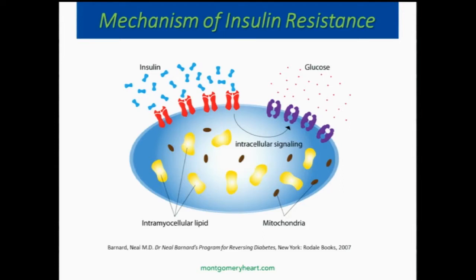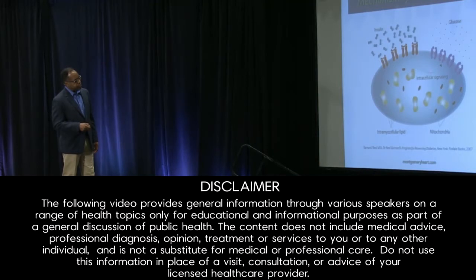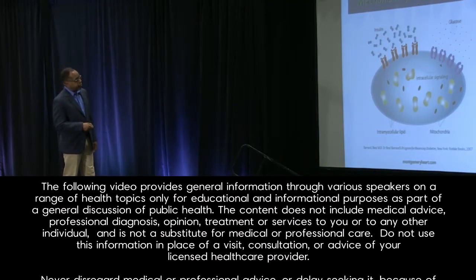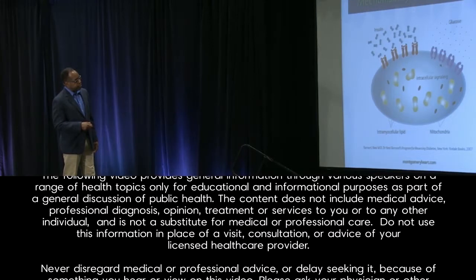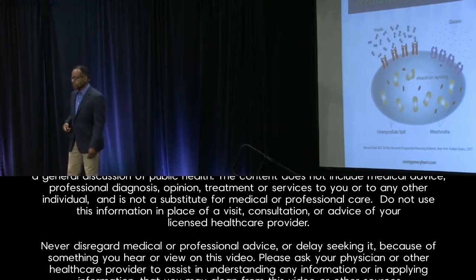That's probably mediated through mitochondrial dysfunction as well. When you have insulin receptor dysfunction, the insulin receptors don't respond to insulin very well. Glucose uptake is impaired, because the insulin receptors act like a key to allow cells to take up glucose. As a result of insulin receptors being impaired, you develop what's called insulin resistance.